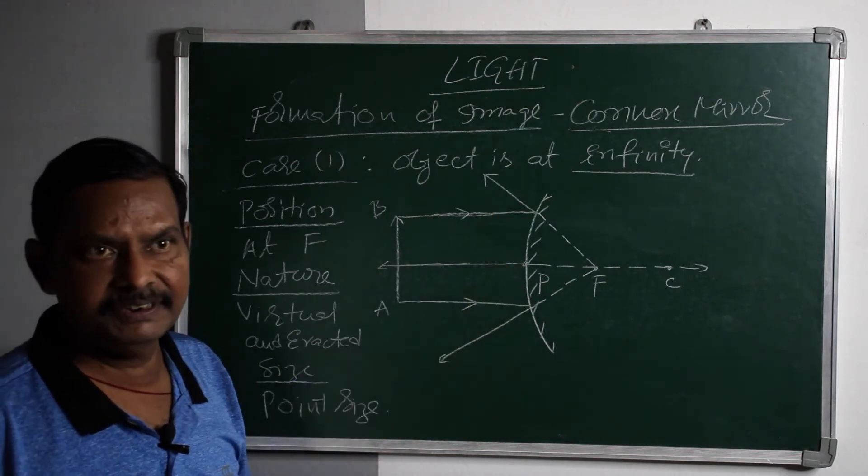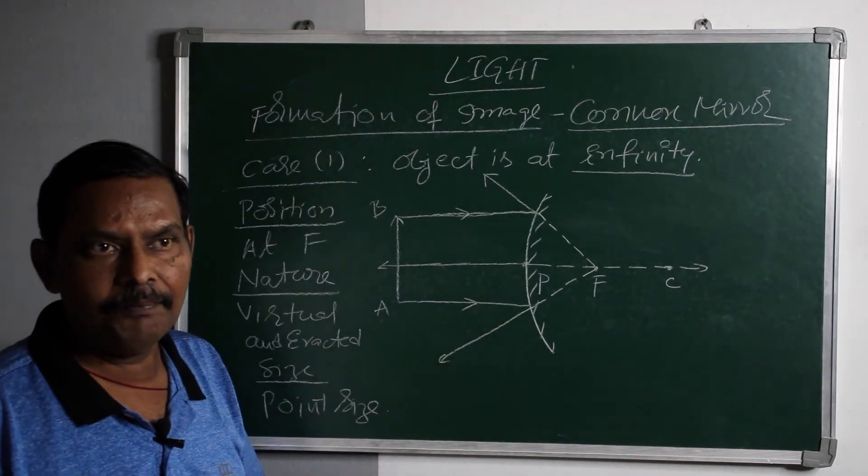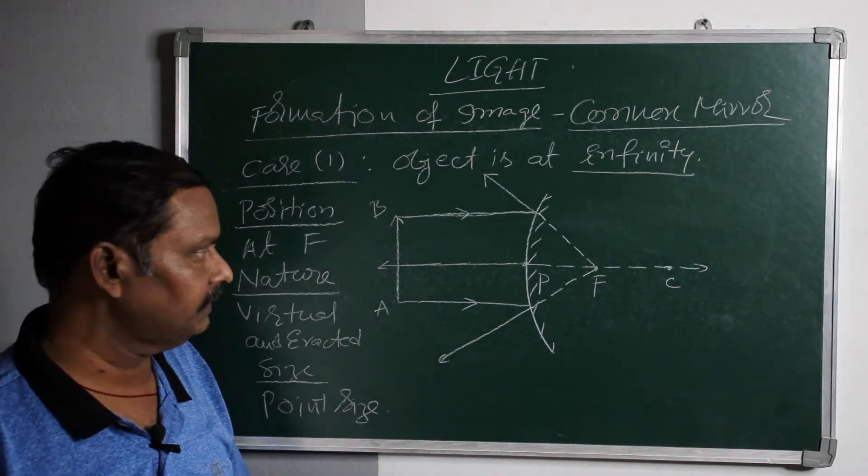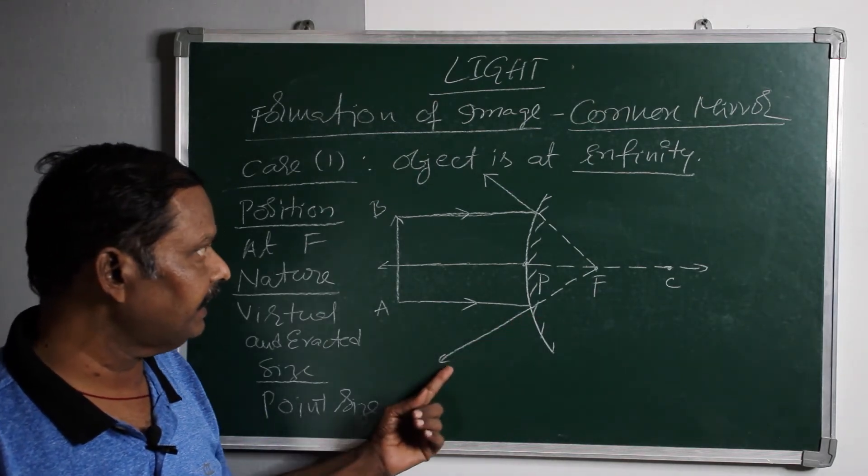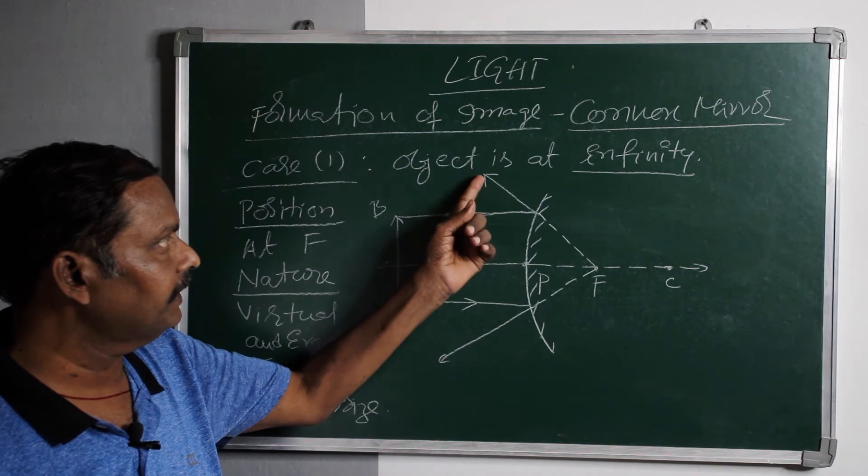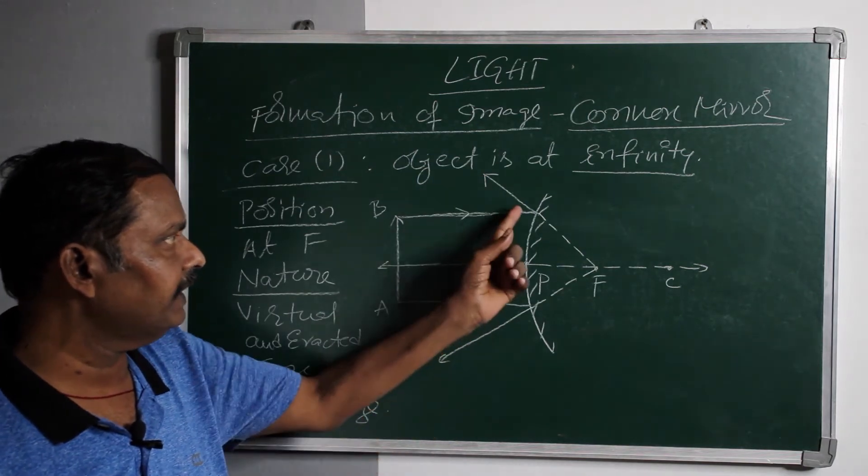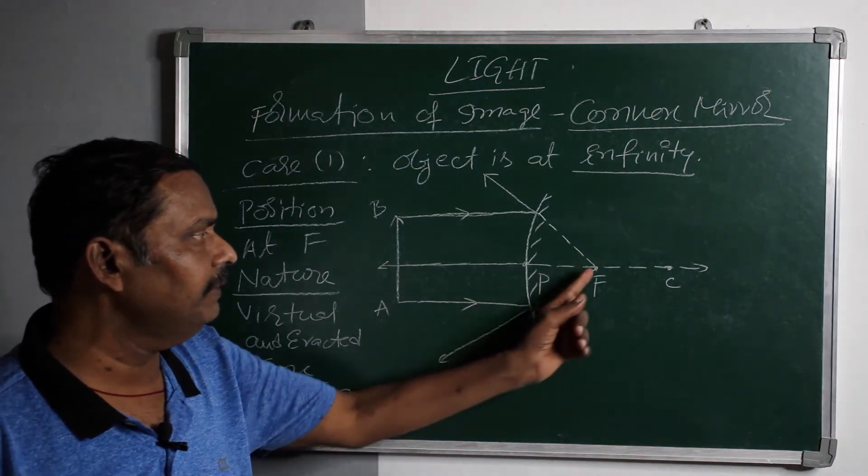After reflection, the incident rays apparently diverge from the focus. This is the first reflected ray and another reflected ray. If you extend these two reflected rays in the backward direction, they meet at f.